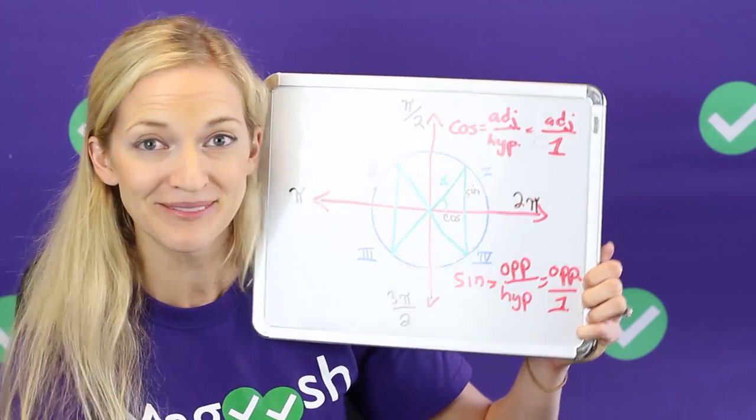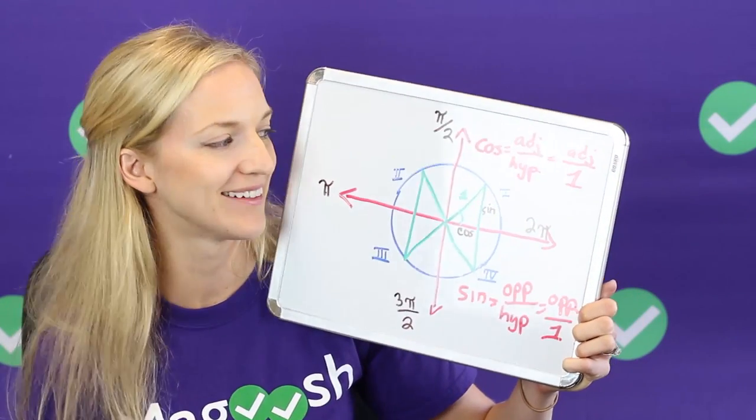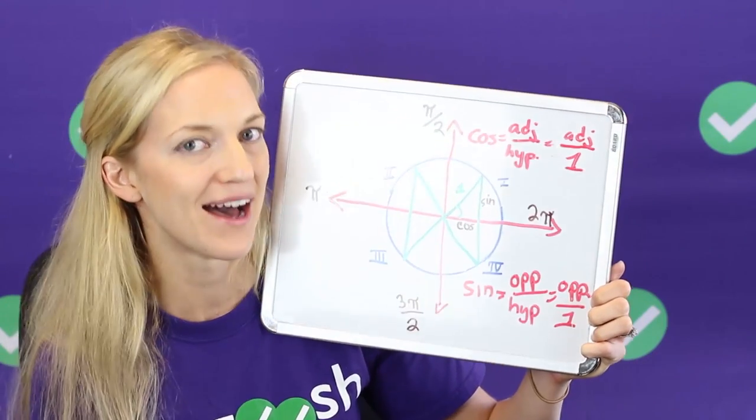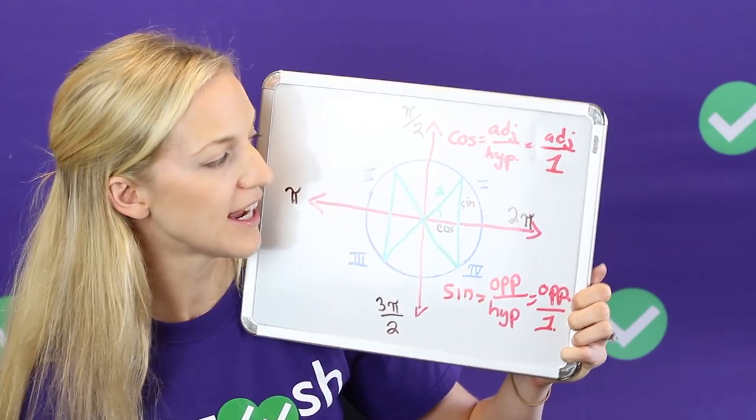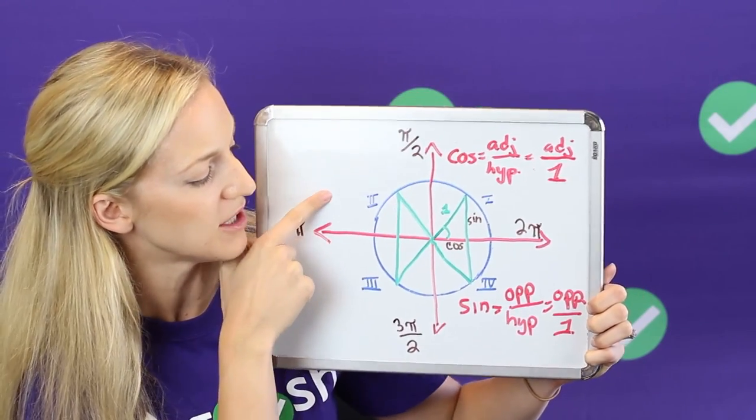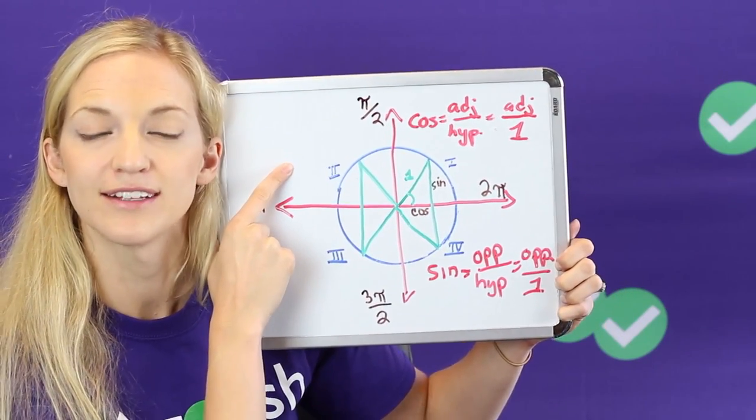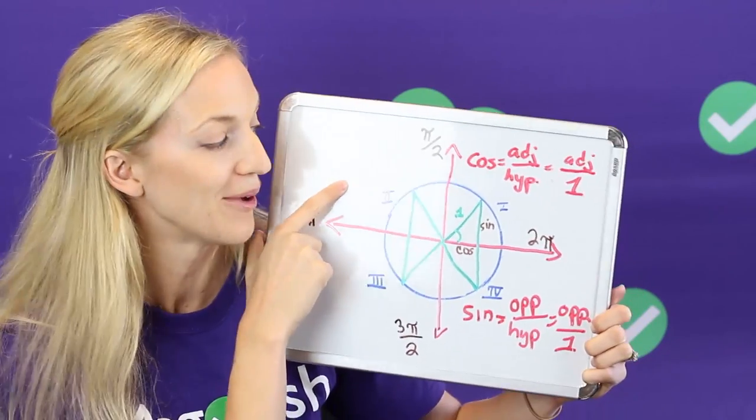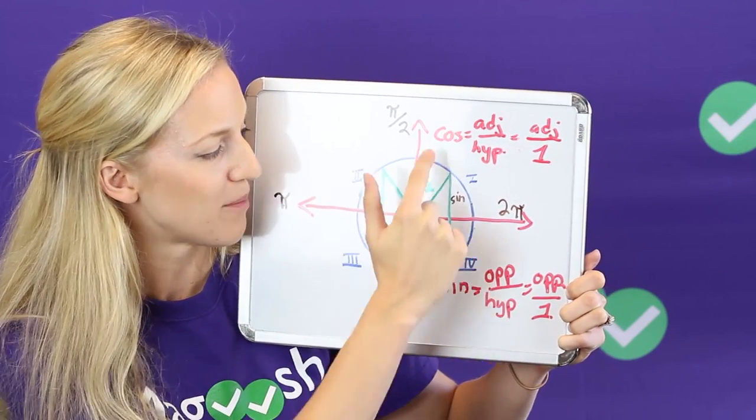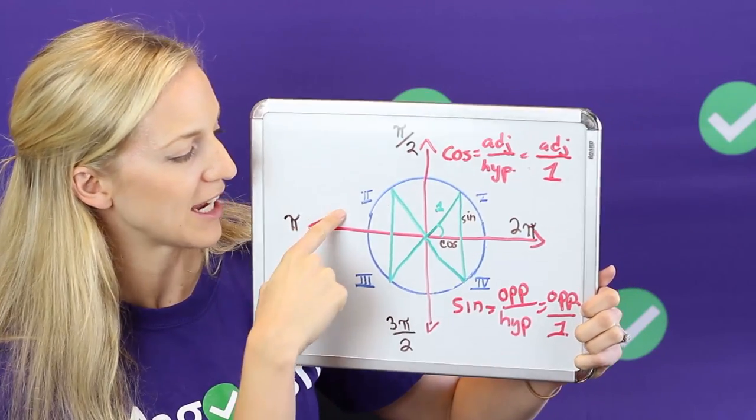All right, still with me? Next thing that is important to know is where are sine and cosine of angles, and tangent, positive or negative. Now if we look at quadrant two here I can tell you right now that in quadrant two sine is positive and cosine and tangent are negative. Now how do I know that? Well it's because of my knowledge about the x and y axis here and how that affects positive and negative things.